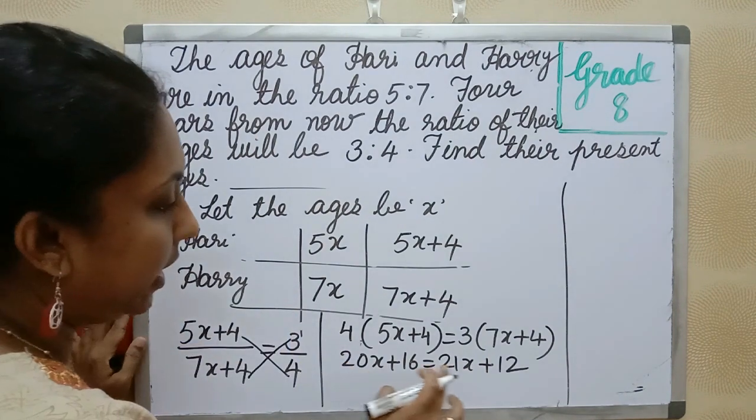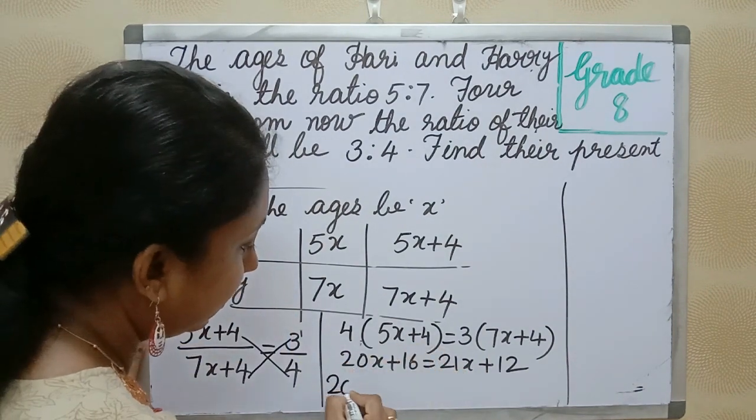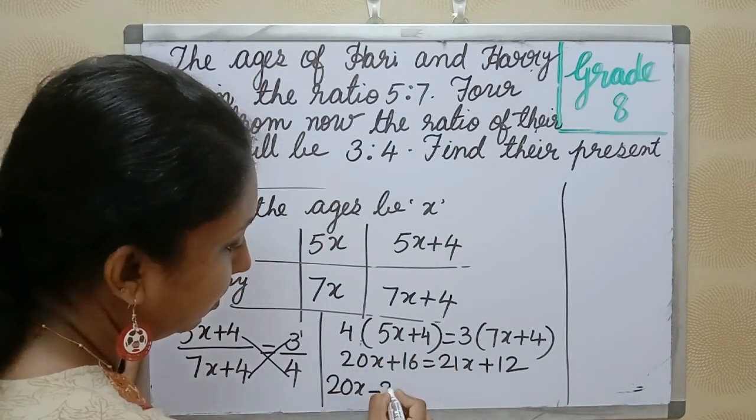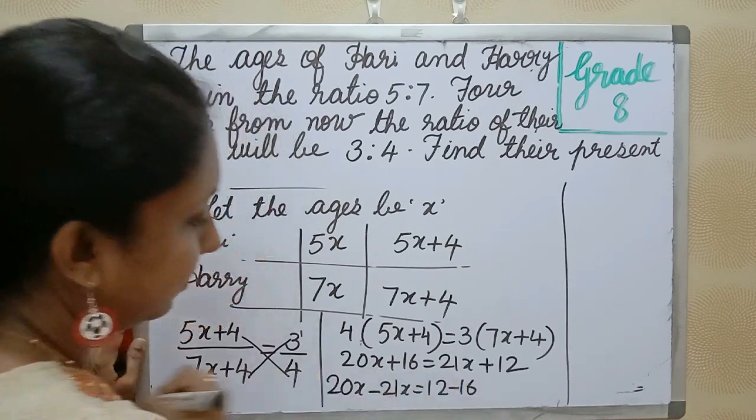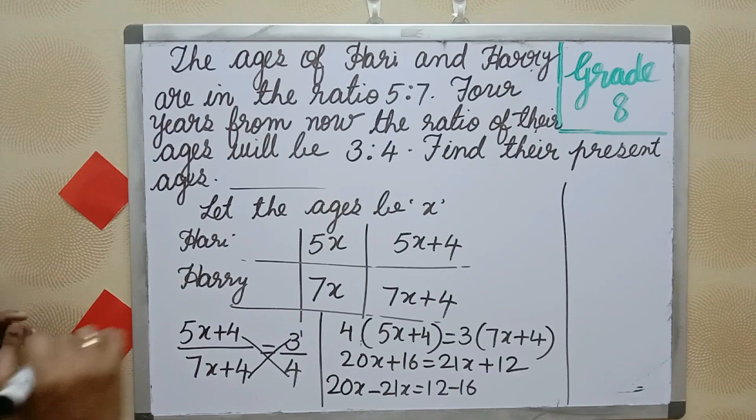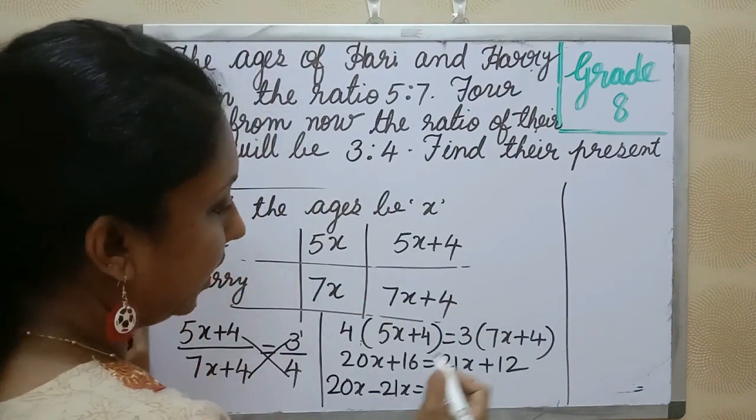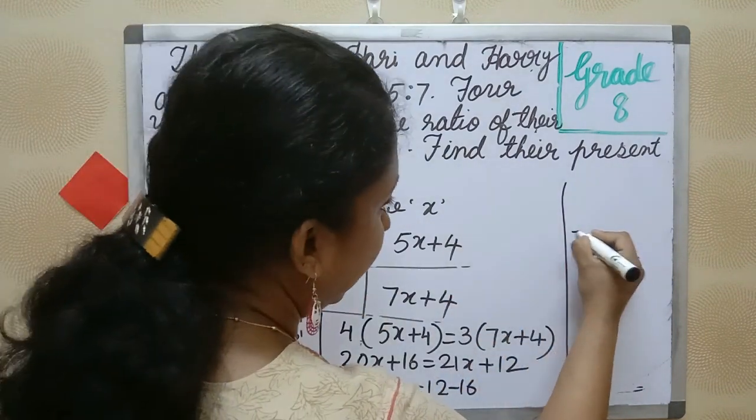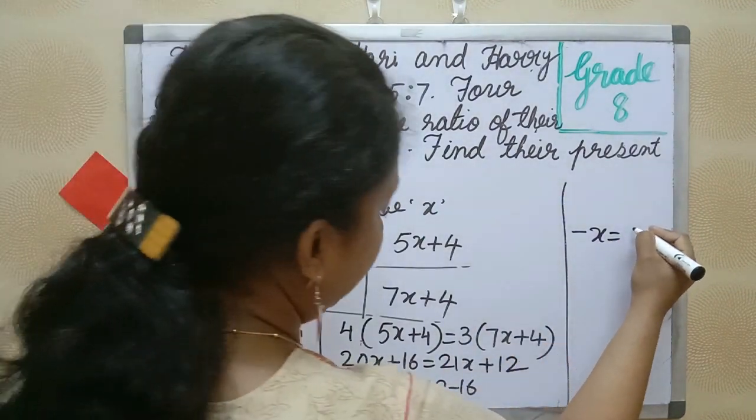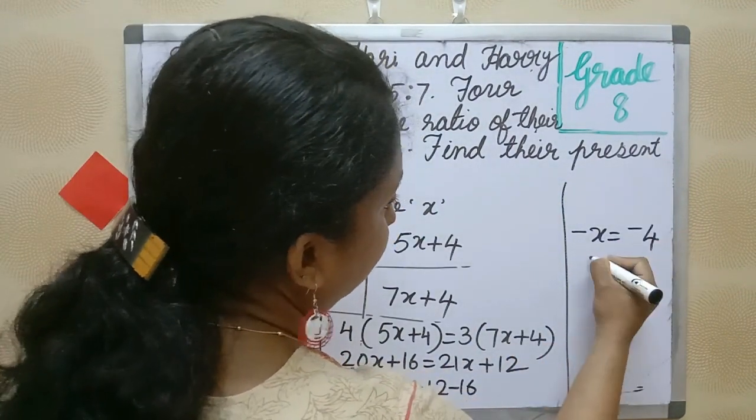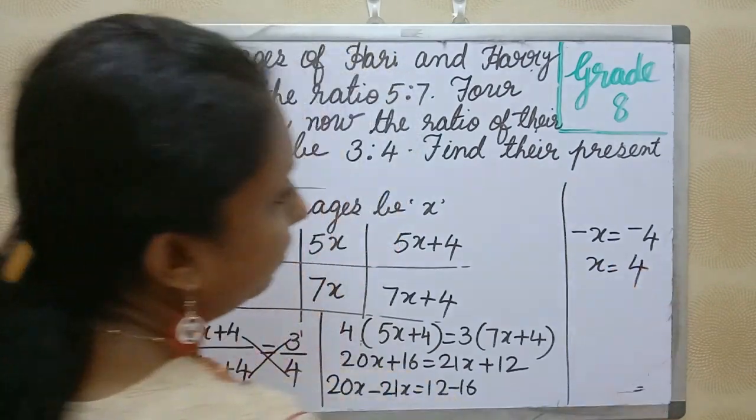Transpose method: 20x minus 21x is minus x. 12 minus 16 is minus 4. So x is equal to 4.